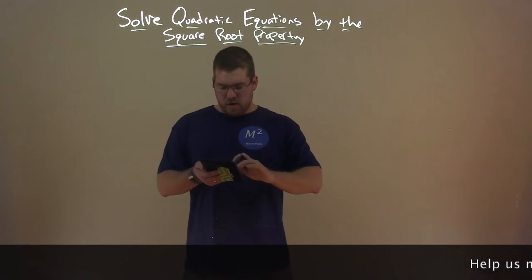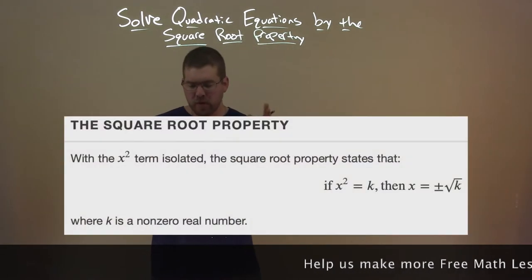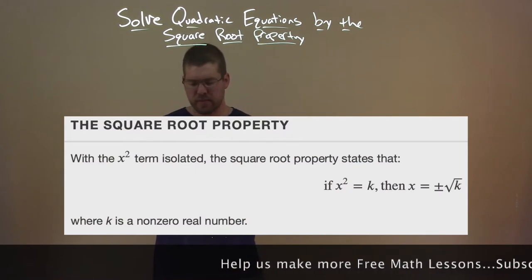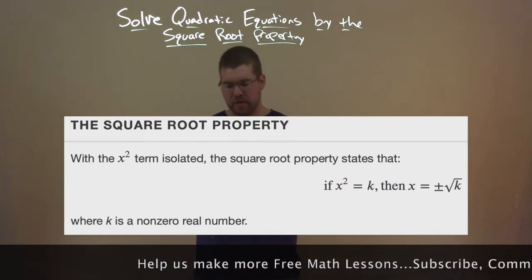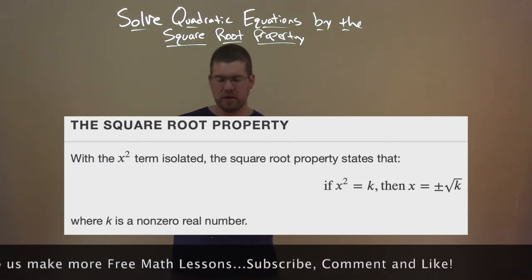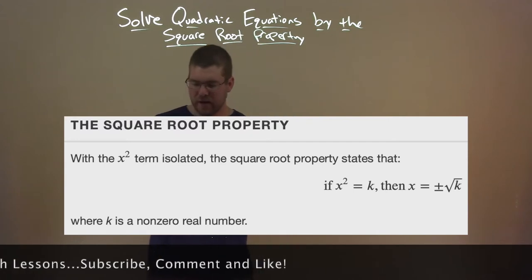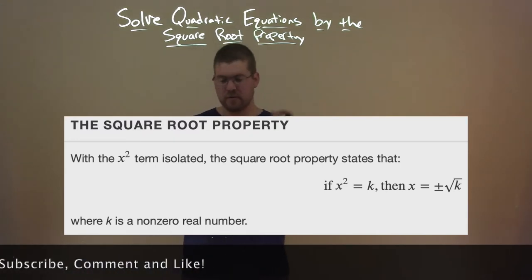So what is the square root property here? With the x-squared term isolated, the square root property states that if x-squared equals k, then x equals plus or minus the square root of k, where k is a non-zero real number.